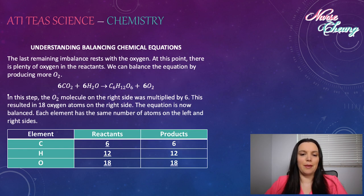Lastly, our last remaining imbalance rests with the oxygen. At this point, there is plenty of oxygen in reactants. We can balance the equation by producing more oxygen, O2. In this step, the O2 molecule on the right side was multiplied by six. This results in 18 oxygen molecules on the right side. The equation is now balanced. Each element has the same number of atoms on the left and the same number of atoms on the right.